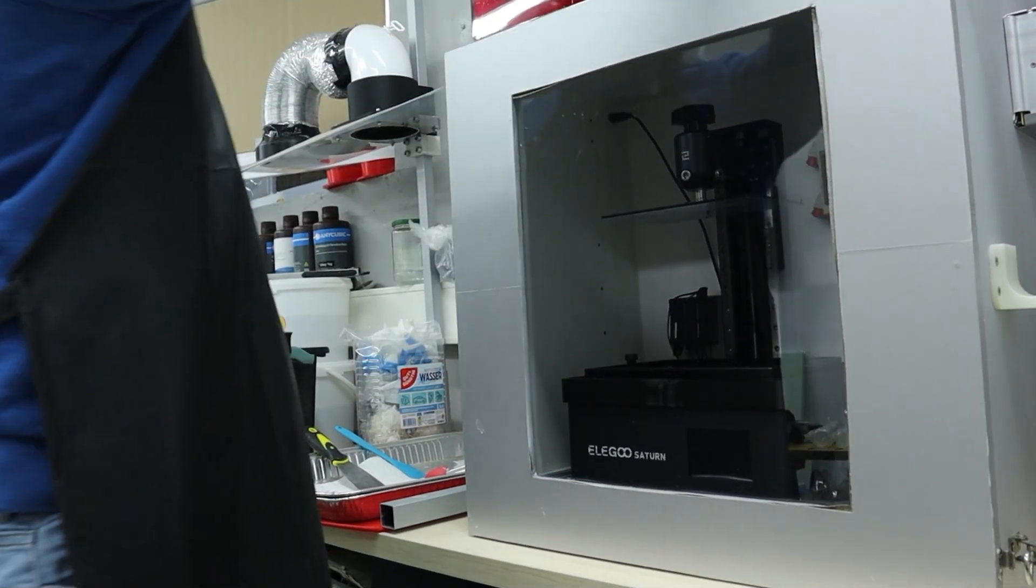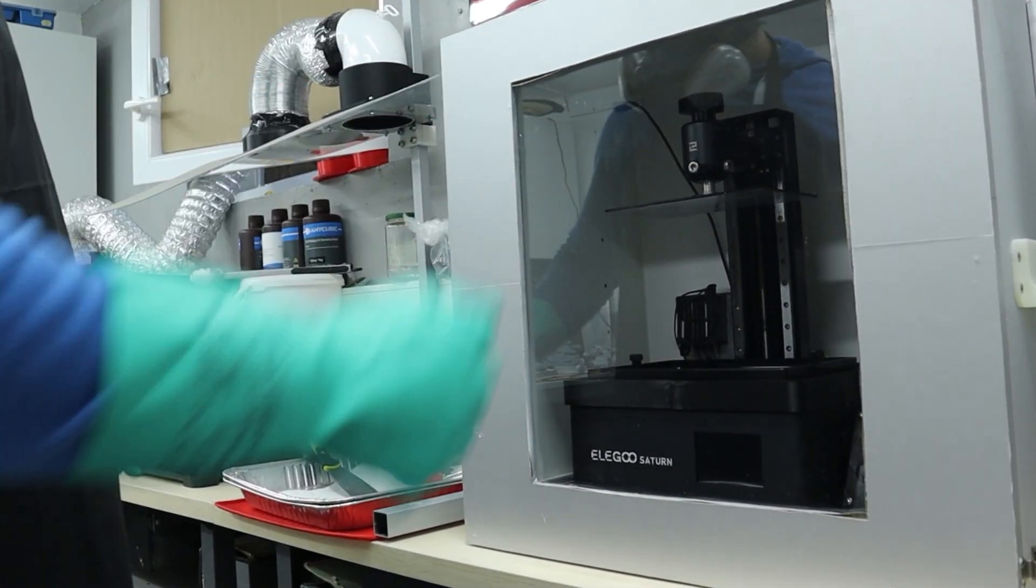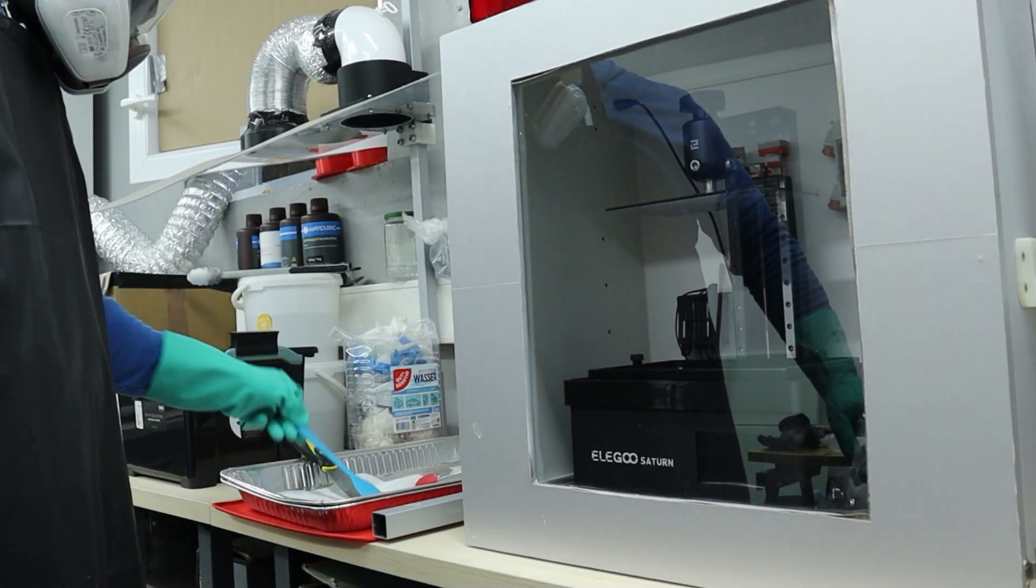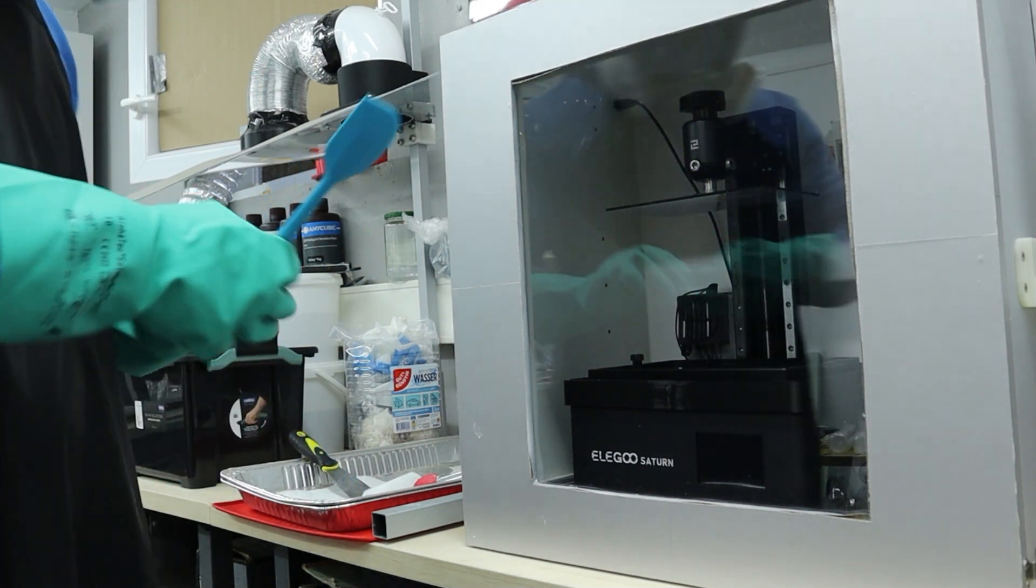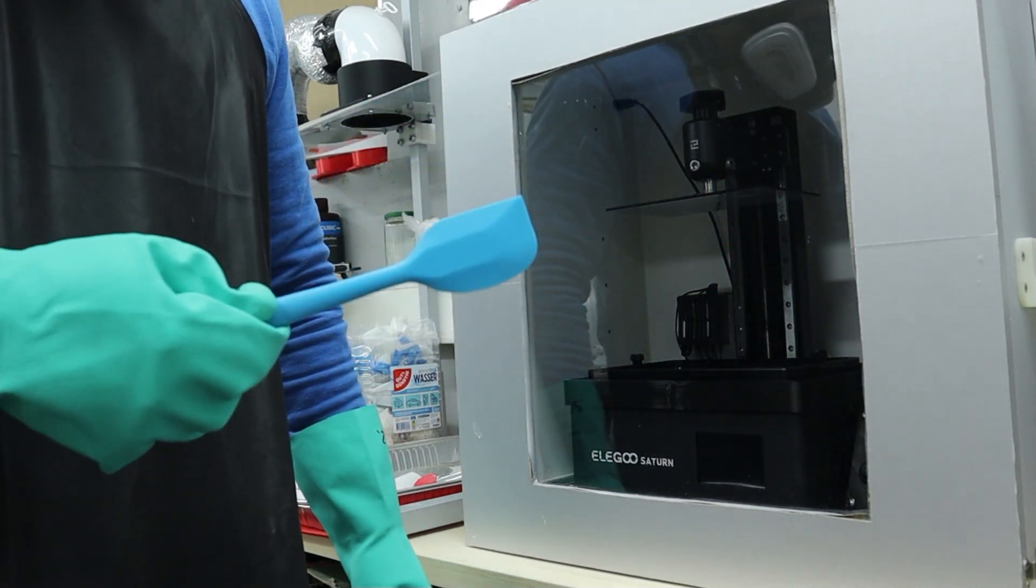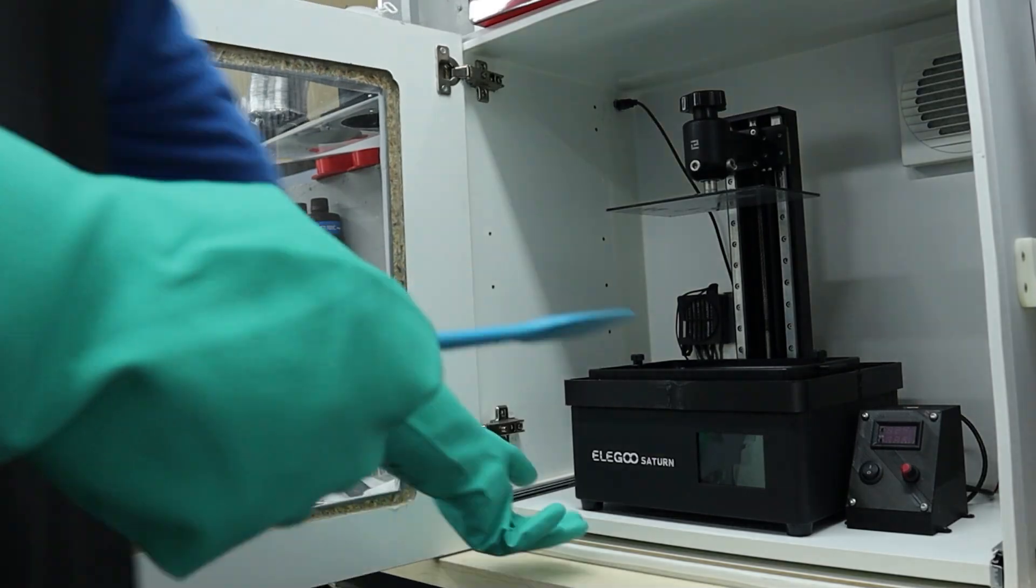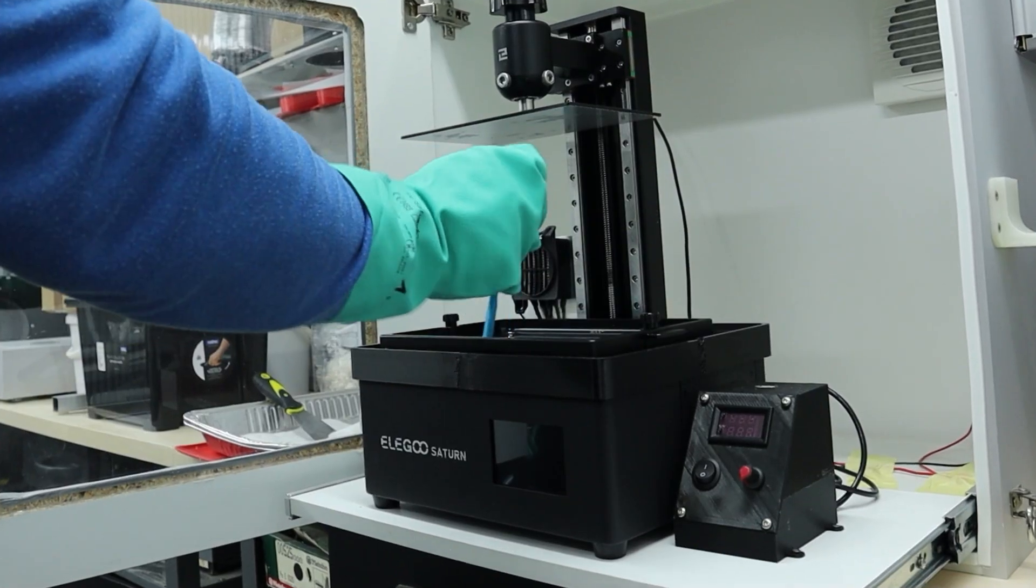After shaking the bottle I put it aside for a second and use a silicone spatula to gently inspect the vat's bottom by feeling for any cured resin remnants adhering to the FEP from the previous print. If I feel something sticking to the vat I utilize the tank cleaning function.